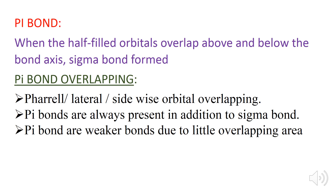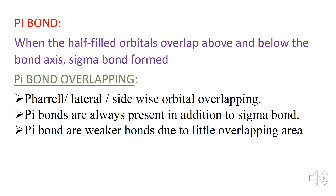Pi bond: when the half-filled atomic orbitals overlap above and below the bond axis, pi bonds are formed. Pi bond overlapping involves parallel or sidewise overlapping of atomic orbitals. Pi bonds are always present in addition to sigma bonds, and pi bonds are weaker bonds due to the lesser overlapping area.